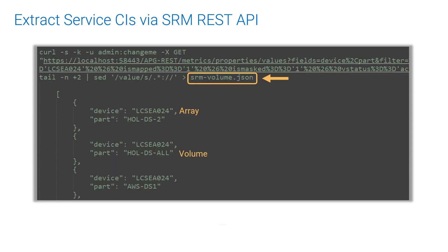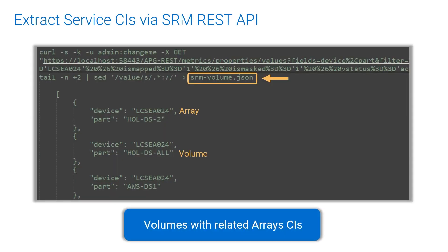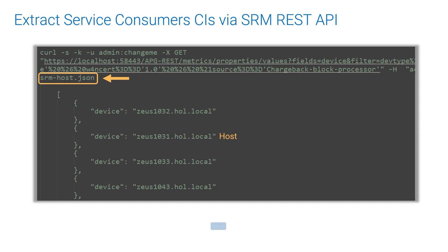Here's an example of a curl command for an HTTP GET query to retrieve storage volumes and the related array data. And here is a similar command to retrieve host data.